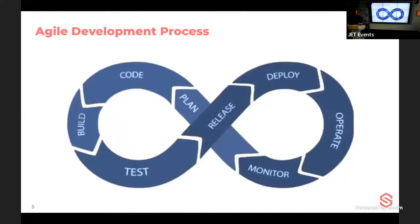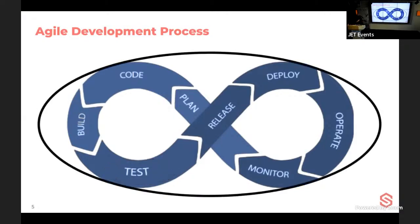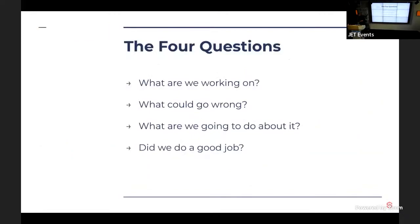In agile development, you get opportunities to think about security during planning, coding, and operations, as well as in testing before release. You can do threat modeling everywhere in agile. The four questions — what are we working on, what could go wrong, what are we going to do about it, and did we do a good job — form a plan-do-check-act cycle for threat modeling.